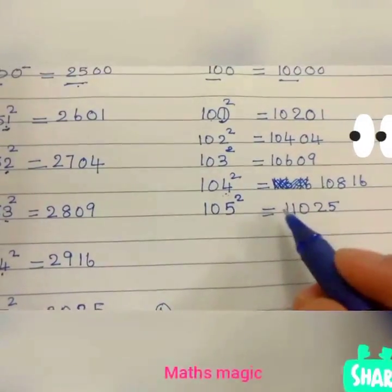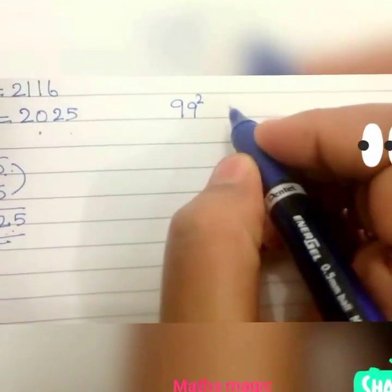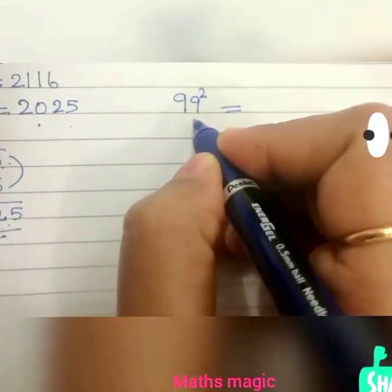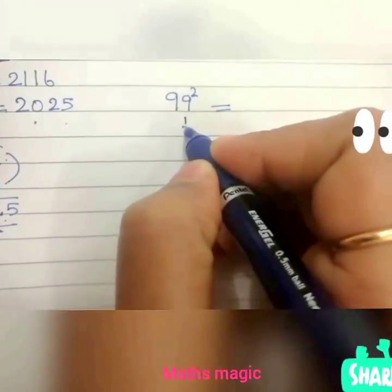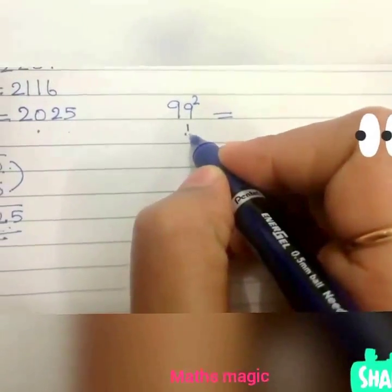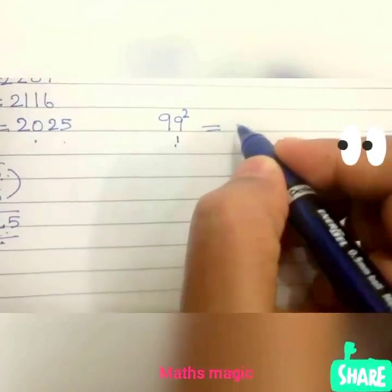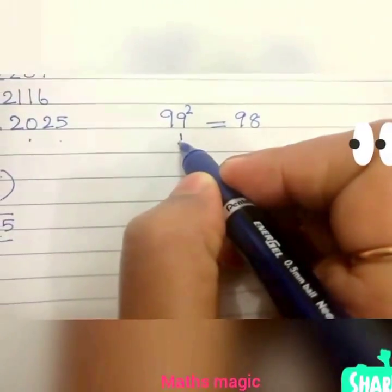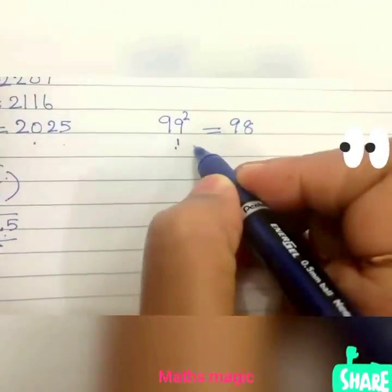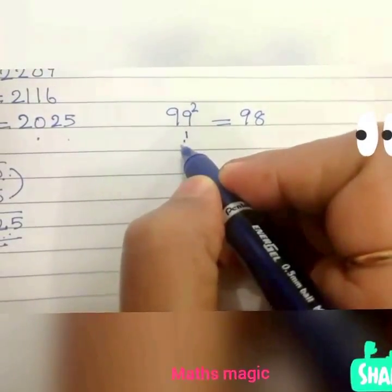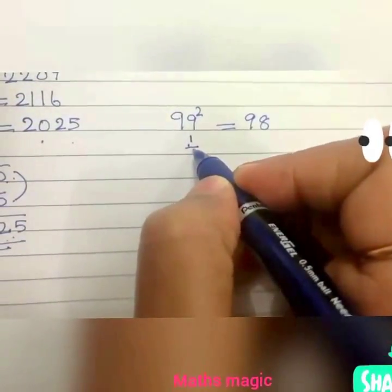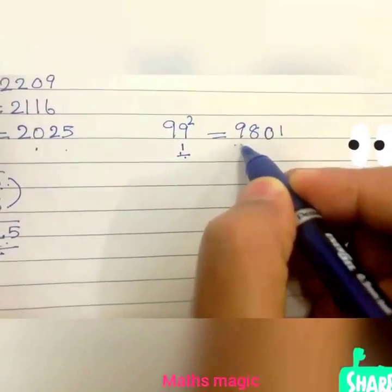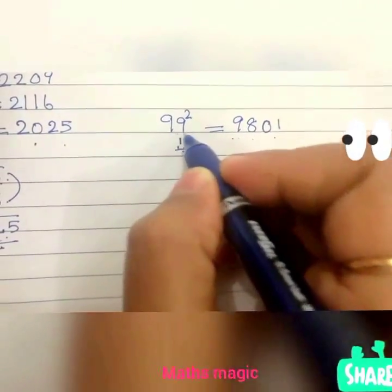Now let us take numbers less than 100. For 99 squared: 100 minus 1 is 99. Double 1 is 2, so subtract 2 from 100: 100 minus 2 is 98. We subtracted 1 from 100 to get 99, so take the square of 1, which is 1, written as 2 digits: 01. So 99 squared is 9801.